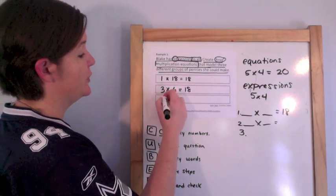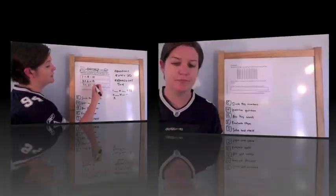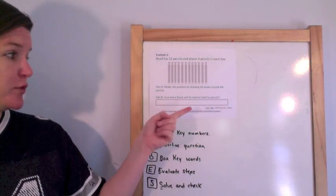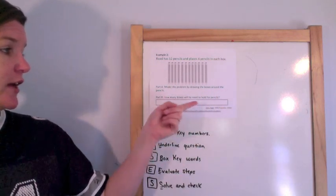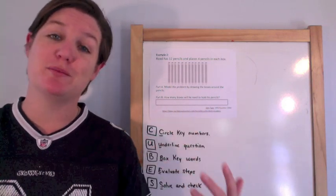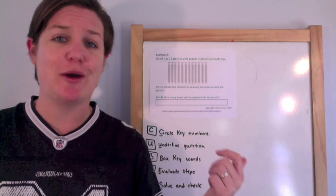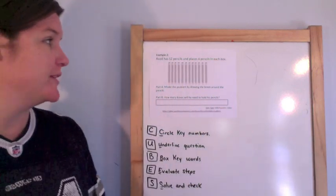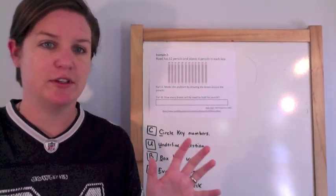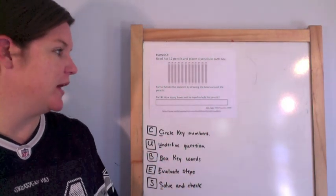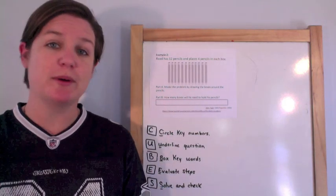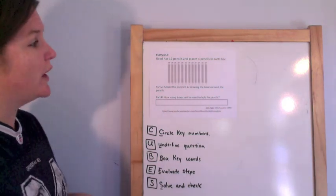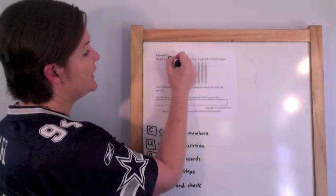Example 2 has two parts. Part A is a grid response — GRI stands for Graphic Response Item Display — which means we're using graphics to represent the answer. Part B is an equation editor where you're just plugging in your answer. It says: Reed has 12 pencils and places four pencils in each box.